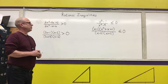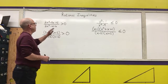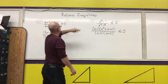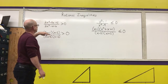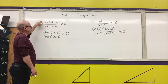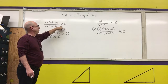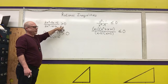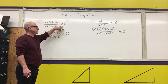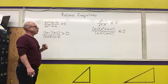The last thing I want to discuss that will help us with chapter 4 are what are called rational inequalities, which is when you end up with a rational function that you are comparing with greater than, less than, greater than or equal to, or less than or equal to.